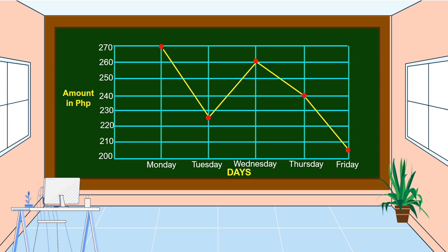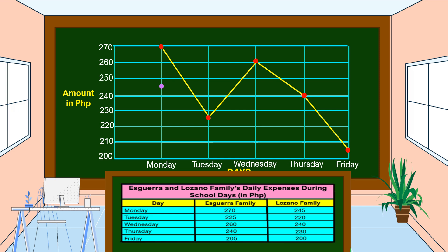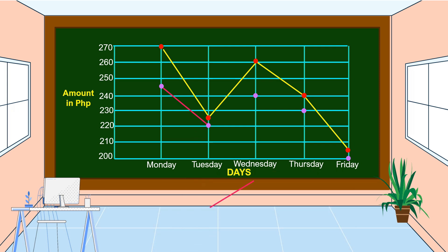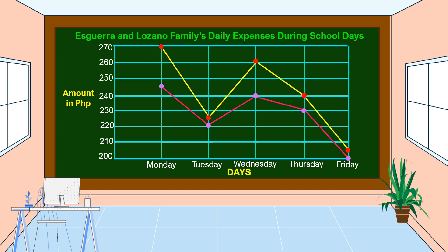Next, we're going to plot the points from Luzano family's expenses. For Monday it is 245 pesos, for Tuesday it is 220 pesos, for Wednesday it is 240 pesos, for Thursday it is 230 pesos, and for Friday it is 200 pesos. Then we connect all the points. This is the graph of Luzano family's expenses. We put a title: Sguera and Luzano Family's Daily Expenses During School Days. We also add a legend — the yellow graph is for Sguera family and the pink graph is for Luzano family. This is an example of a double line graph.